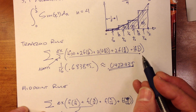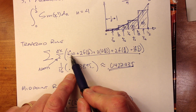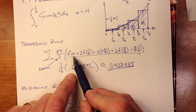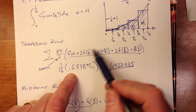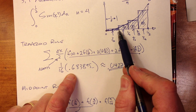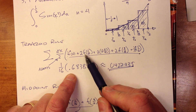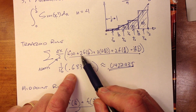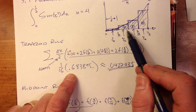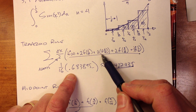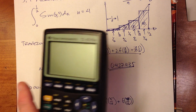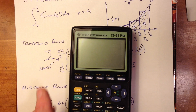We plug in f of zero, which is zero, and evaluate it. Then we plug in f of one-eighth and multiply it by two. Then we do f of one-fourth and multiply that by two. I've done all of that on the calculator.